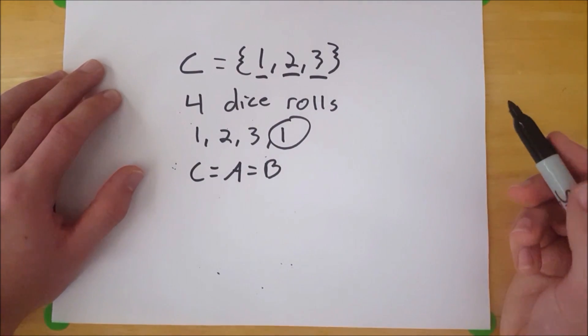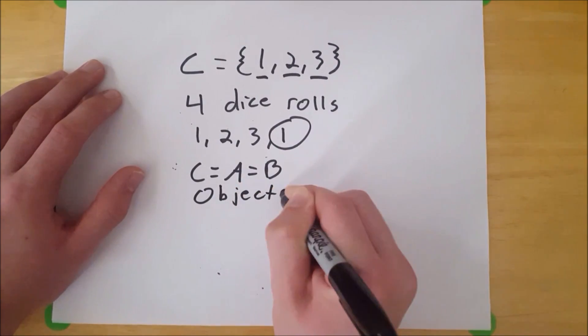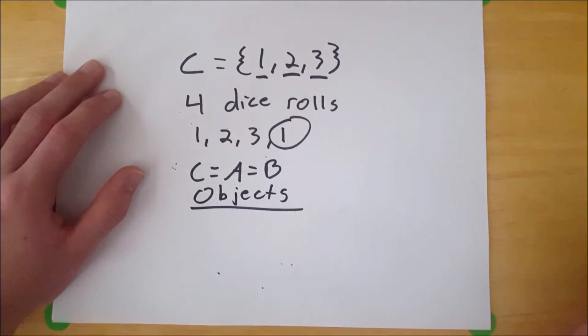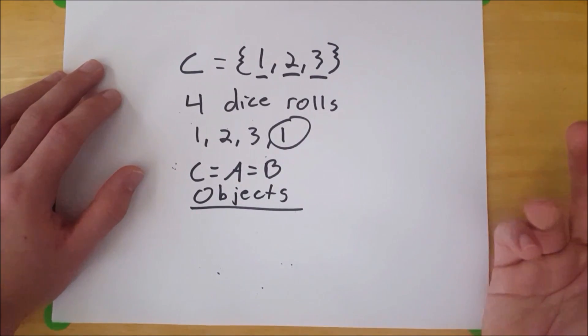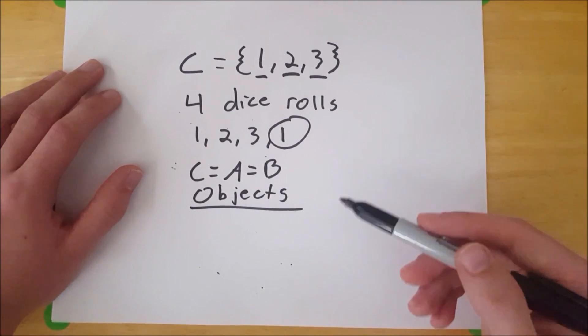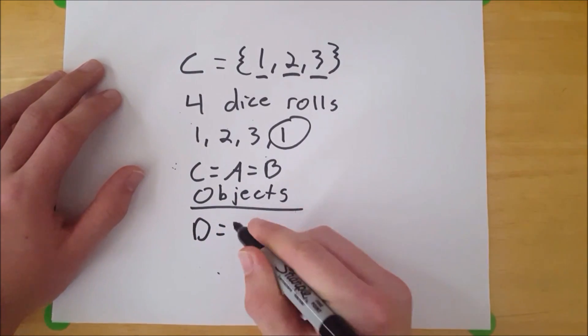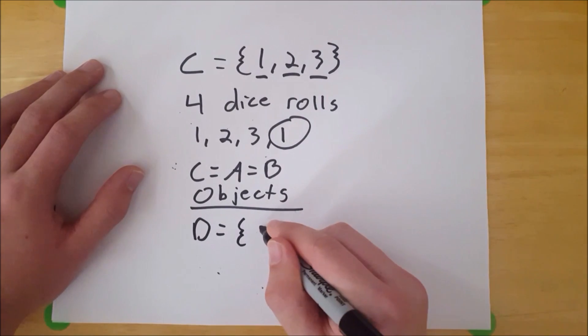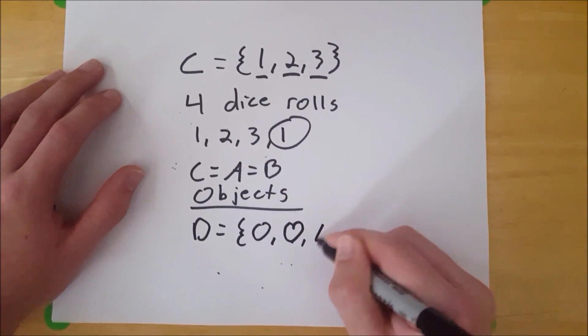Now the last keyword I mentioned was objects. So what's the importance of that word? Well, that's important because a set doesn't have to contain just numbers. It can contain anything you please. The set could contain Pringle flavors, the set could contain breeds of dogs, or anything you like. So suppose we have another set, set D, and that is equal to circle, heart, and triangle.